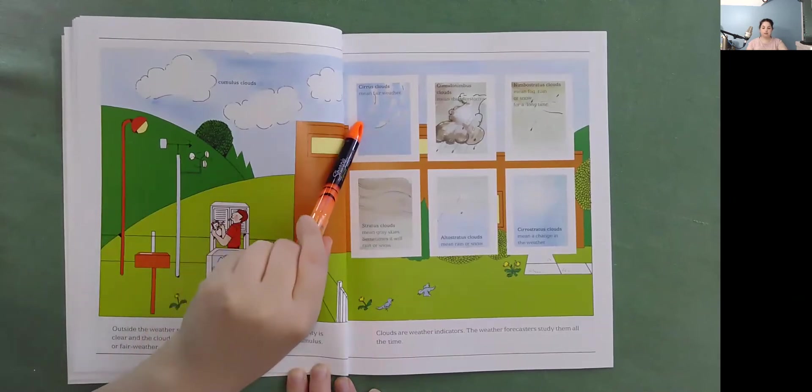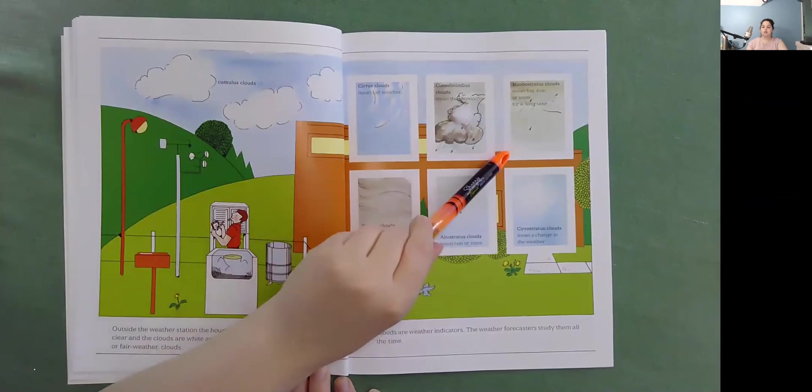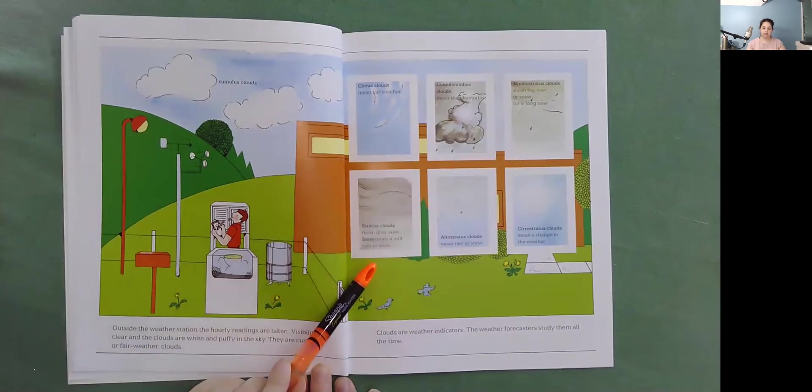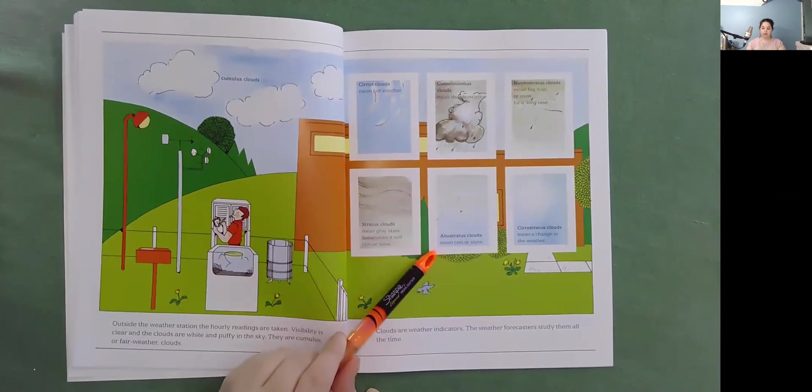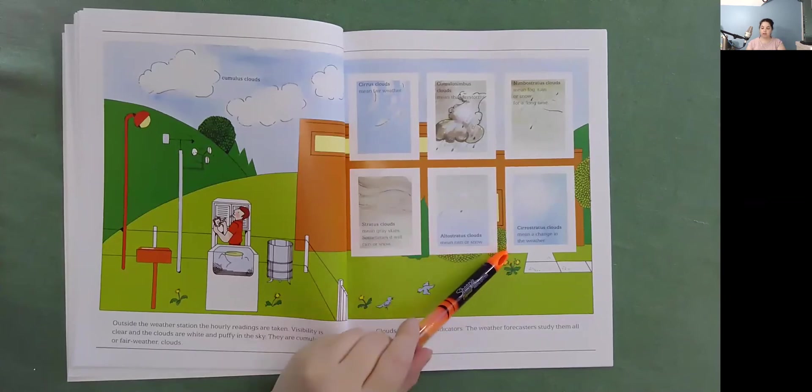Cirrus clouds mean fair weather. Cumulonimbus clouds mean thunderstorms. Nimbostratus clouds mean fog, rain, or snow for a long time. Stratus clouds mean gray skies. Sometimes it will rain or snow. Altostratus clouds mean rain or snow. Cirrostratus clouds mean a change in the weather.